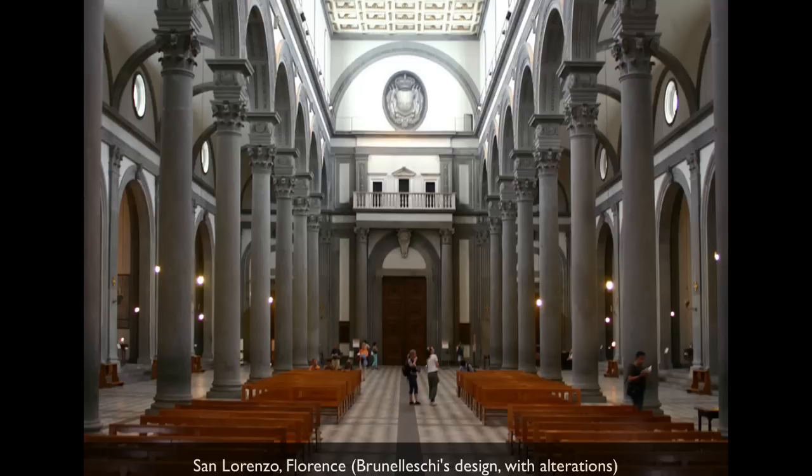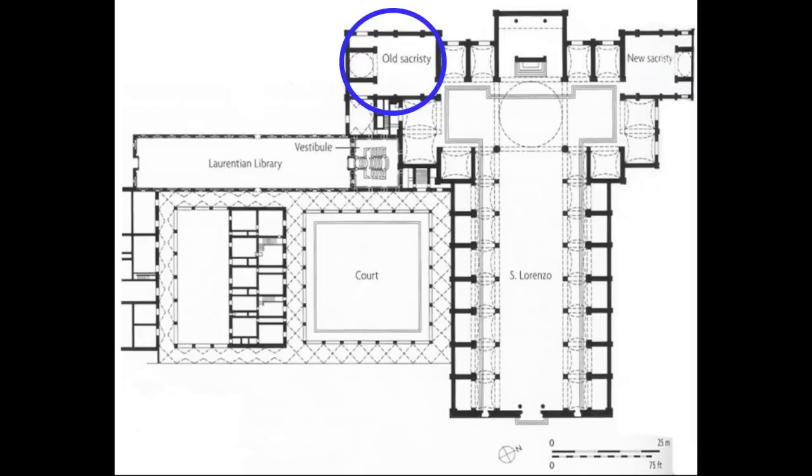Giovanni di Bici di Medici, who's buried here along with his wife. In the early 1400s, when a group of people decided to rebuild the church that was here, the families contributed money — each was in control of its own chapel. Giovanni di Bici di Medici decided to pay for the building of the sacristy. He got a bigger space, he paid more money, and he hired Brunelleschi — he was smart.